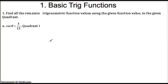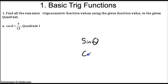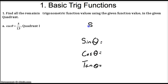Hey students, today we're going to be starting our review for our trigonometry test that's coming up. We're going to be covering everything that we learned in trigonometry, and where we're going to be starting is with the basics of trig functions. These are our most basic trig functions — sine of theta, cosine of theta, and tangent of theta — and these are just ratios. Trigonometry is just the ratios of the sides of a triangle.